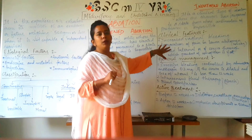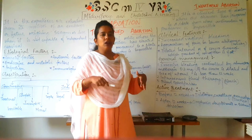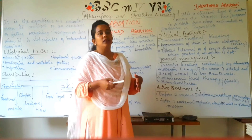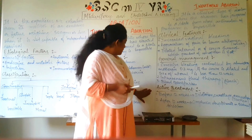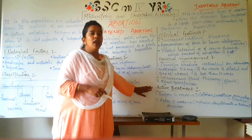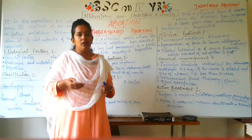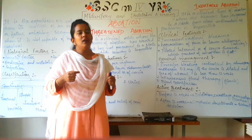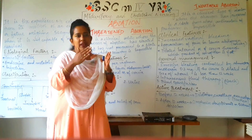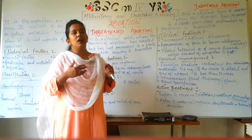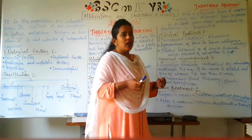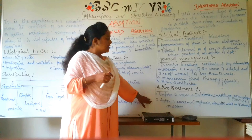Regarding active treatment: if the pregnancy is before 12 weeks, dilatation and curettage is advisable because the fetal size is very small. An apparatus is inserted to dilate the cervix and uterus, and then a blunt curette is used to evacuate the fetus, followed by suction — this is called dilatation, evacuation, and curettage.